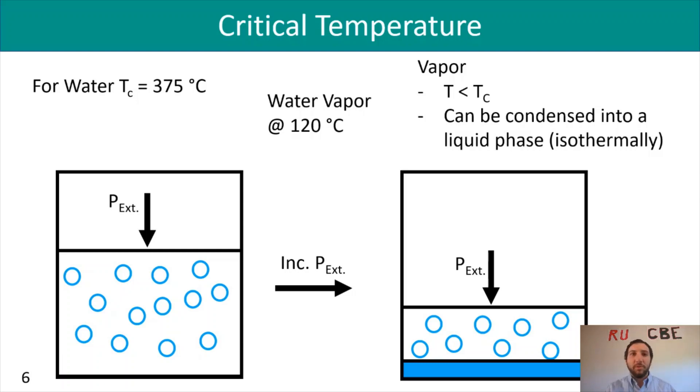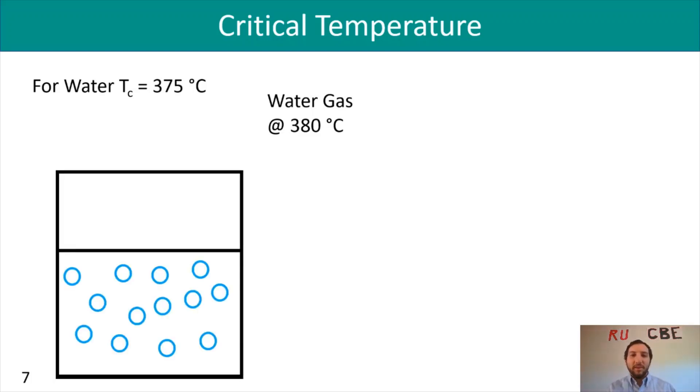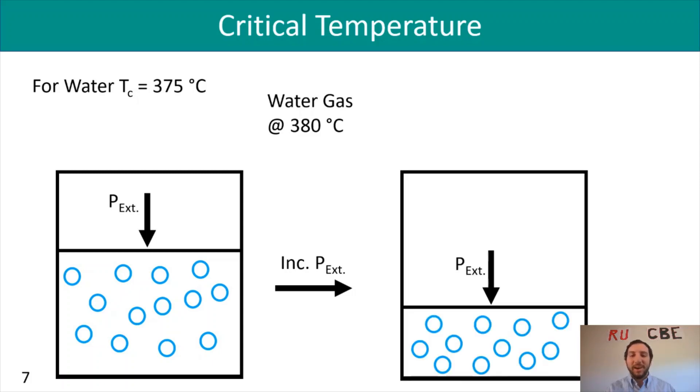As we just mentioned, let's say instead of having my water at 120 degrees Celsius, I made it 380 degrees Celsius. You notice that I'm at a temperature above my critical temperature. In this case, again, I'm going to have a jar with some water molecules, apply that external pressure, increase my external pressure, and no matter what I do for that external pressure, I'm not getting any water. I'm going to continue to have water gas molecules. In that case, for my gas, I have a gas now because my temperature is above the critical temperature, and I cannot condense this into a liquid phase isothermally.